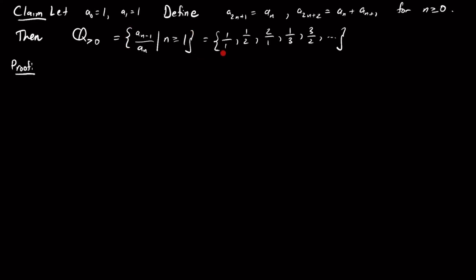This is interesting because it gives us an alternate proof for the countability of the positive rationals. Normally when you see this proof, you see a zigzaggy type of argument. This gives us an alternate proof.